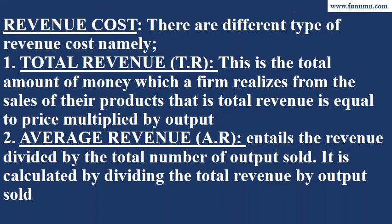Revenue cost: there are different types of revenue cost. Total revenue is the total amount of money which a firm realizes from the sales of their products; that is, total revenue equals price multiplied by output. Average revenue (AR) is the revenue divided by the total number of outputs sold, calculated by dividing the total revenue by outputs sold.